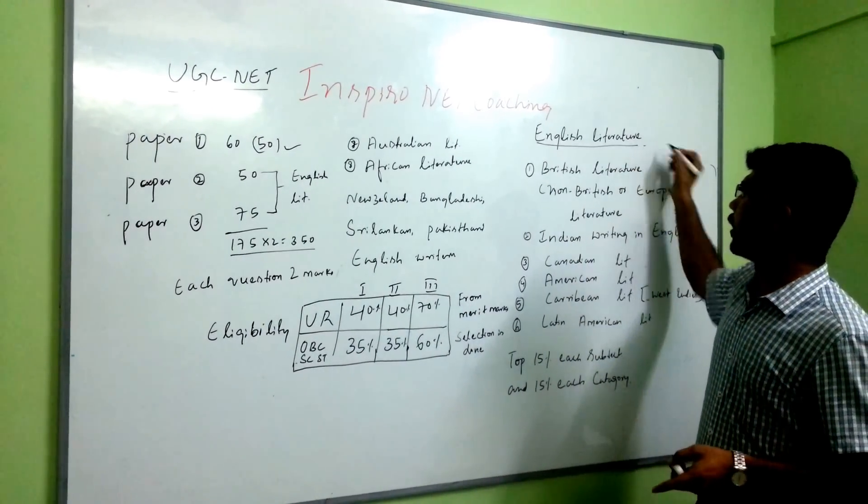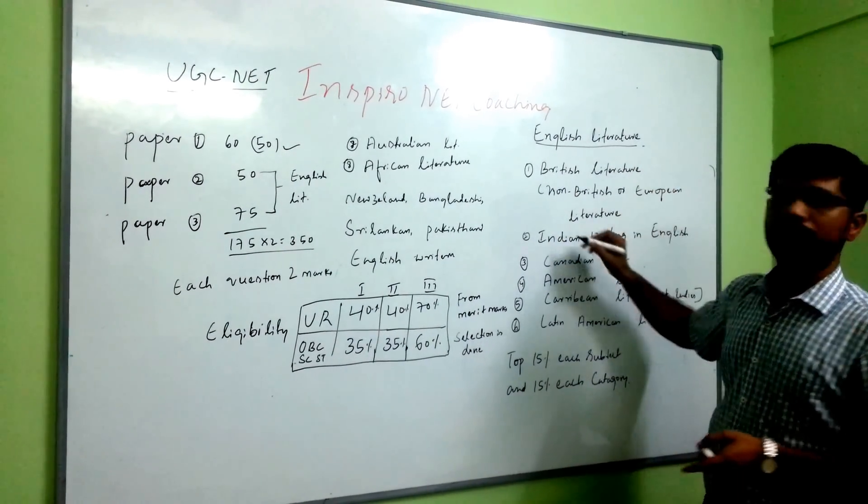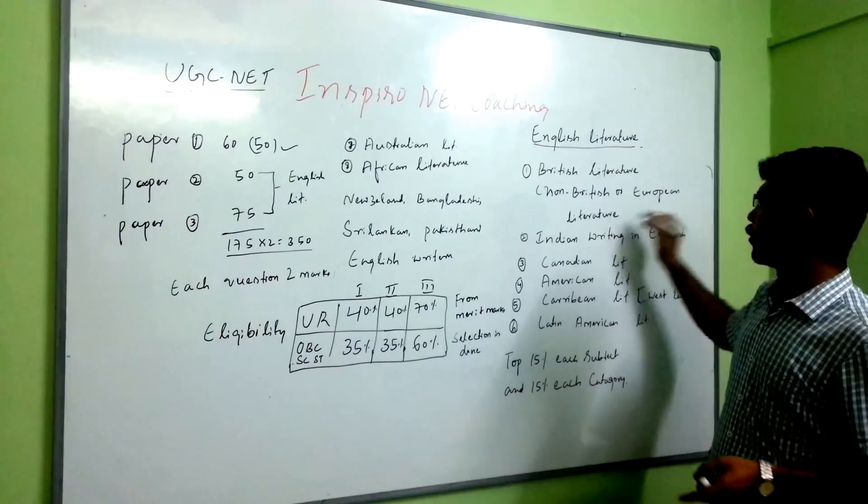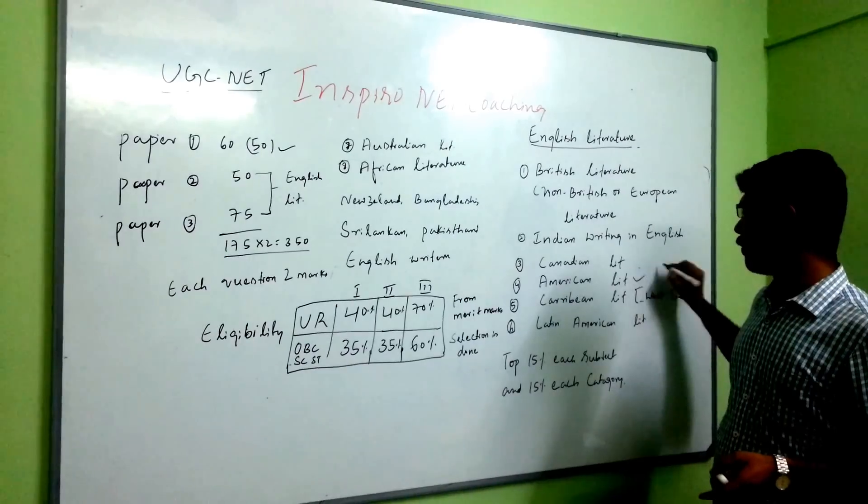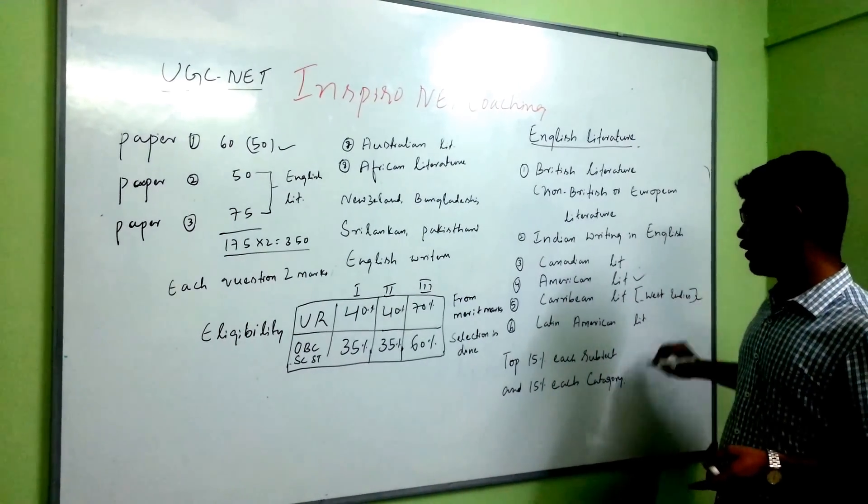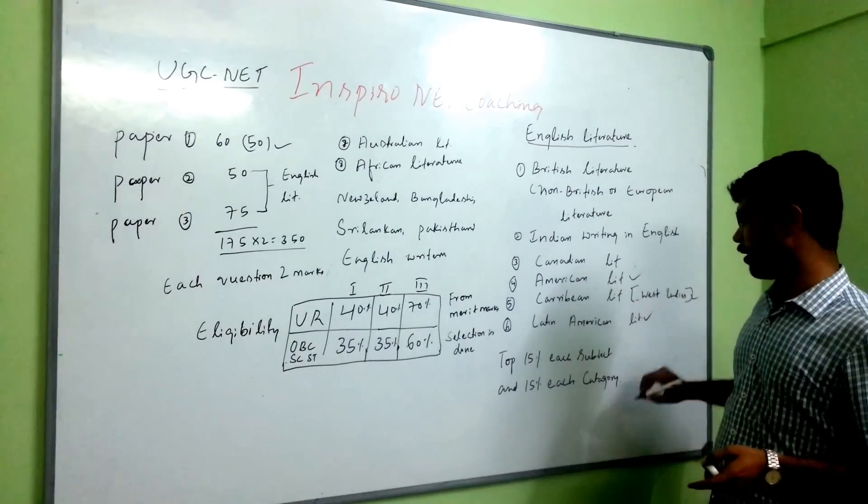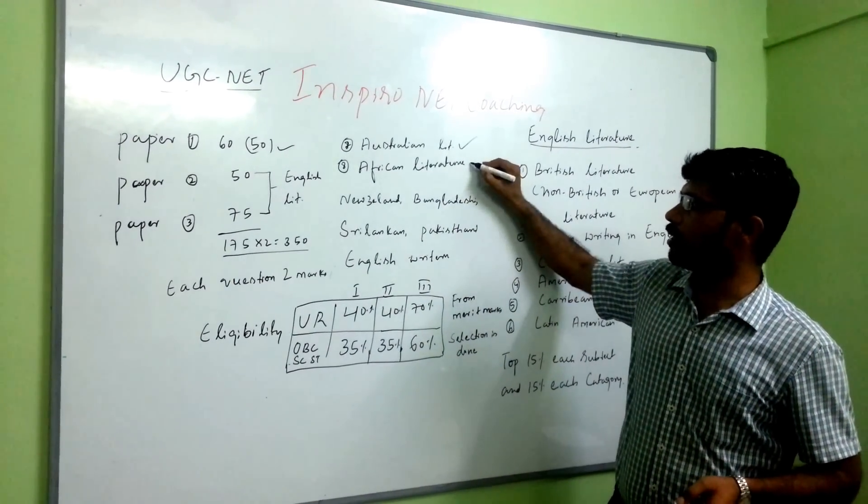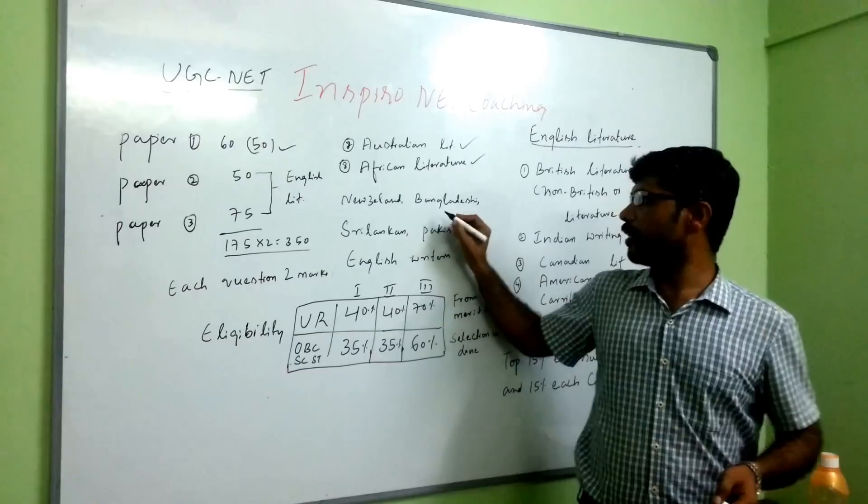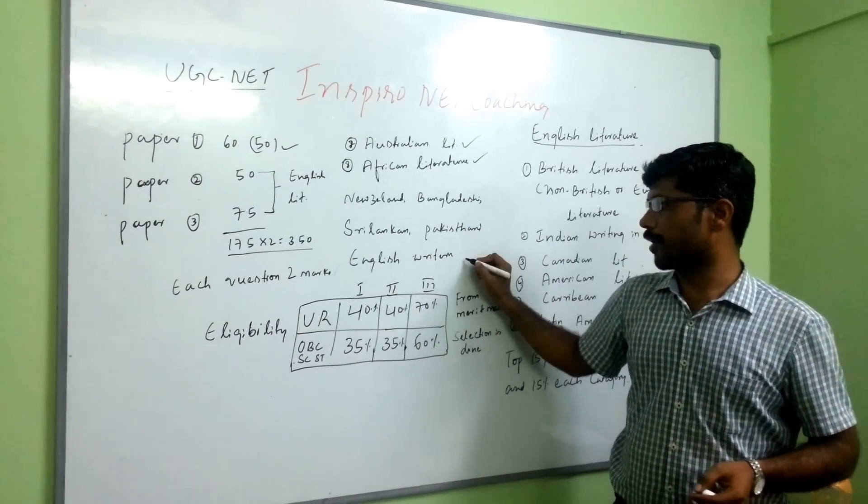It contains British literature, non-British literature, European literature and Indian writing in English, Canadian literature, American literature, West Indian literature and Latin American literature, and also Australian literature, African literature, New Zealand, Bangladeshi, Sri Lankan, Pakistani English writers.